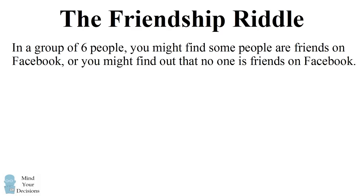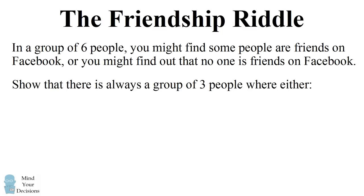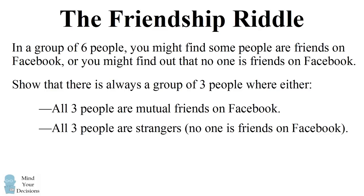There are many different combinations for how people can be friends or not friends on Facebook. But there is always a special property that's true. Show that there is always a group of three people where either all three people are mutual friends on Facebook, or all three people are strangers—no one is friends on Facebook. Give this problem a try, and when you're ready, keep watching the video for the solution.